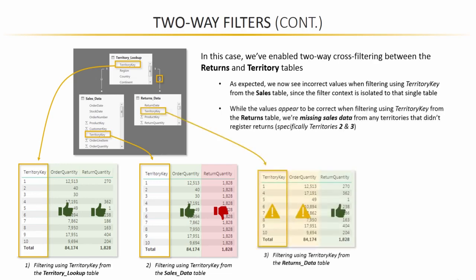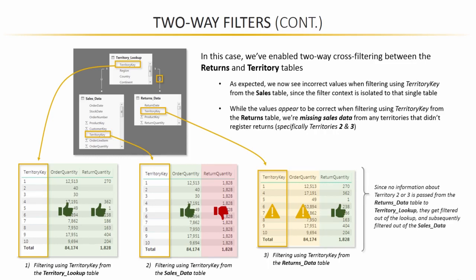But here's where it gets interesting. When we pull in the territory key from the returns data table, the returns are accurate, which we know will be the case, but check out territory key and order quantity. At first glance, things look good. But remember that territories 2 and 3 don't even exist in the returns table. So since no information about territory 2 or 3 ever gets passed up to the territory lookup, then they'll subsequently get filtered out of the sales data table as well.